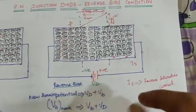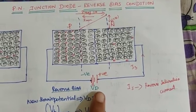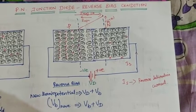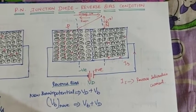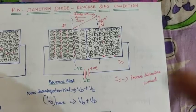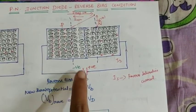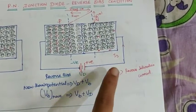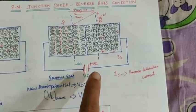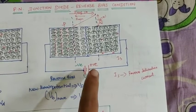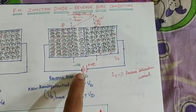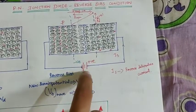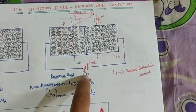Now, this diagram shows the reverse bias condition. What is biasing? In forward bias, the P-type is connected to the positive terminal of the battery and the N-type to the negative terminal. But in reverse bias, it is the opposite connection — the negative terminal is connected to P-type and the positive terminal of the battery is connected to N-type. That is the reverse bias condition.